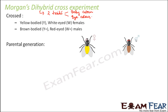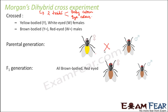When these two were crossed, in the F1 generation all offspring were brown-bodied and red-eyed. This was consistent with Mendel's rules — the dominant traits were expressed and the recessive traits remained hidden. So up to the F1 generation, results followed Mendel's rules of inheritance. But what happened in the F2 generation was different.